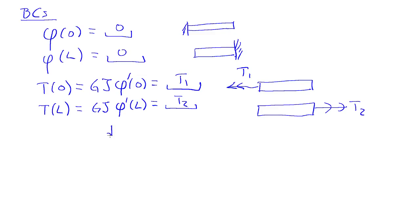So when we integrate the equation d/dz of gj d/dz phi plus T equals zero, when we integrate this, we're going to integrate twice. And each time I integrate, I'll get a constant of integration. And I use the boundary conditions here to eliminate the constants of integration.